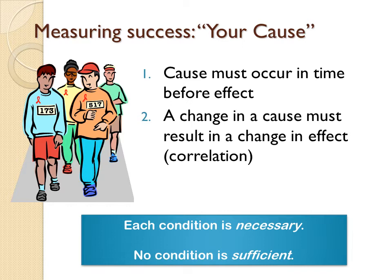This is where statistics come in — statistical data can show correlation. But correlation does not in and of itself demonstrate cause and effect. I can't emphasize this point more strongly, because this is where the problem is when we get information from the news media: they see a correlation and they use the word 'cause.' It is not a cause. It doesn't matter how strong the correlation is, or if every single time you make a change in the cause a change in the effect occurs.